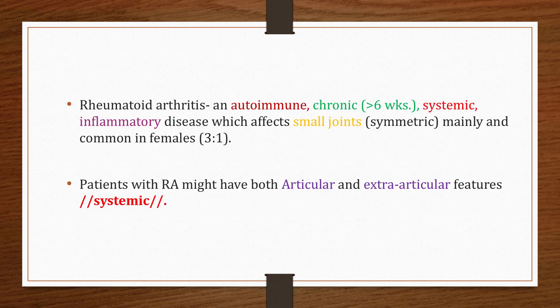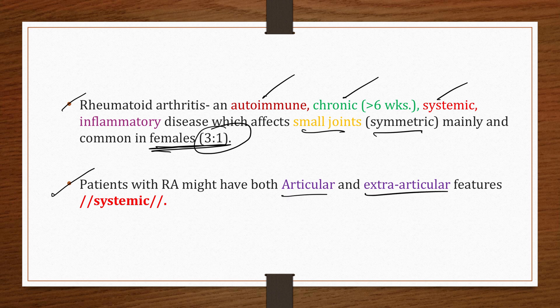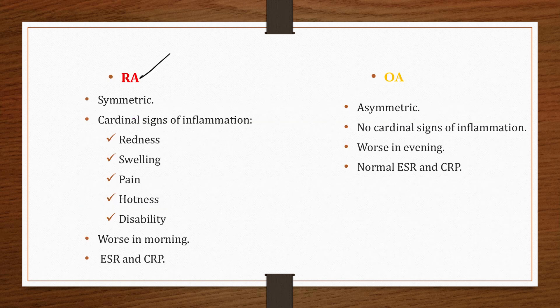Before we discuss extra-articular manifestations, let's recap the definition of rheumatoid arthritis. RA is an autoimmune, chronic — meaning more than six weeks — systemic inflammatory disease affecting small joints symmetrically. It is common in females, with a female-to-male ratio of 3:1. Patients may have both articular and extra-articular features due to its systemic nature.